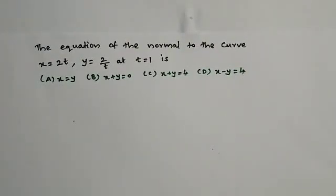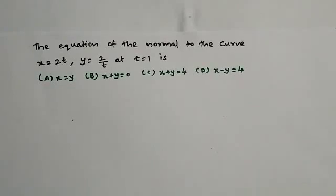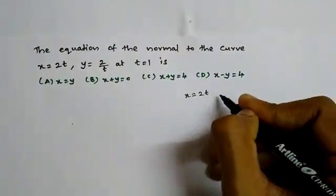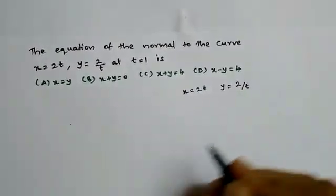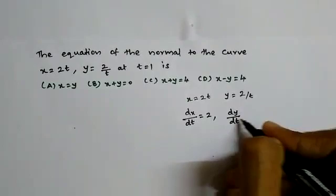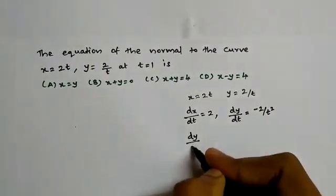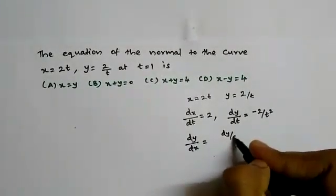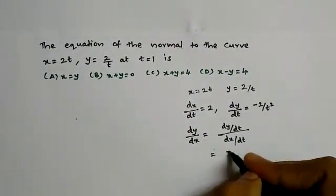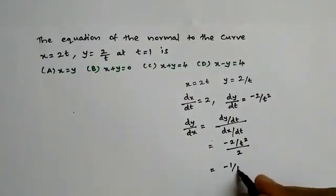Next question: find the equation of the normal to the curve x equals 2t, y equals 2 by t, at t equals 1. Options: x equals y; x plus y equals 0; x plus y equals 4; x minus y equals 4. Given x equals 2t and y equals 2 by t, dx by dt equals 2 and dy by dt equals minus 2 divided by t squared. So dy by dx equals dy by dt divided by dx by dt equals minus 2 divided by t squared divided by 2, which equals minus 1 by t squared.